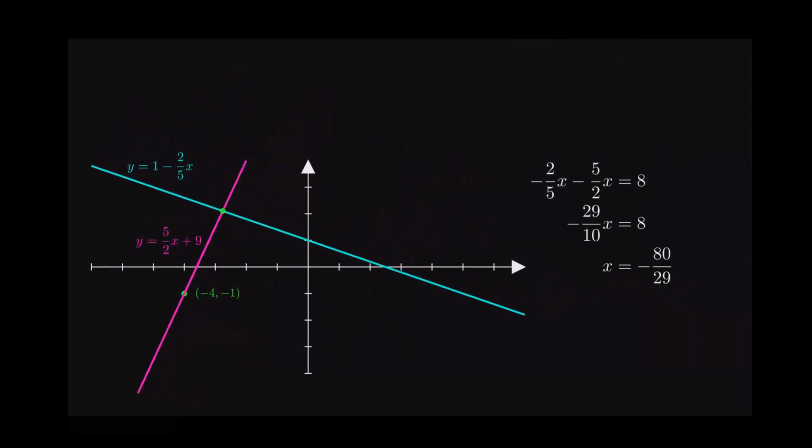All right, so we have an x value, and then we can find the y value by plugging the x back into one of those equations. It doesn't matter which one. I chose the first one, so we just substitute in the value for x and we calculate the y now.